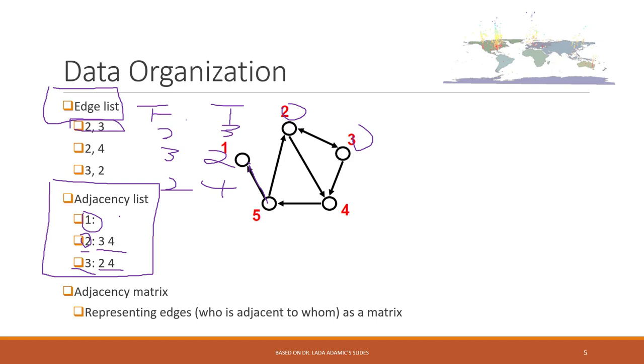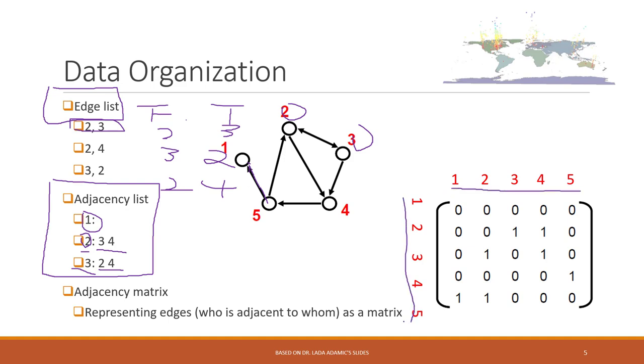Another common way is to represent the network using a matrix. Here's how we can use a matrix: we put all the nodes into columns and rows. If there is a connection between nodes, we mark one. For example, there is a connection from two to three, so we use one. There is also a direction from three to two, so we also put that as one. There's no connection between one and two, so one-two is zero and two-one is also zero.